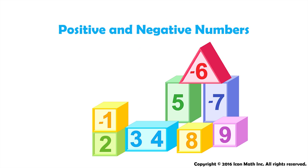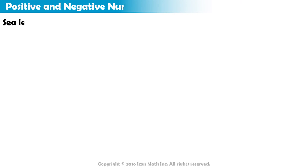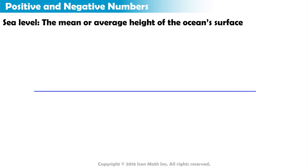Positive and negative numbers. Sea level refers to the mean or average height of the ocean's surface. We use sea level to describe the height of geographical features, such as mountains and trenches.